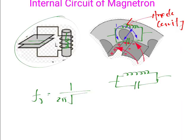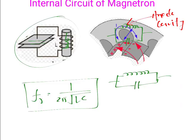The resonance frequency of the cavity is given by f = 1 / (2π √LC). That is how the resonance frequency of the cavity magnetron is determined. The magnetron is a high power microwave generator.